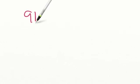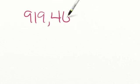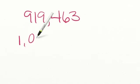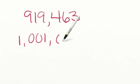Let's go ahead and go through a practice problem. I'm going to give you two numbers, and I want you to compare and see which number is larger. So I want you to tell me if 919,463 is larger than 1,001,001. Let's go through our steps together. We know that our first step is lining up the place values starting with the ones place.